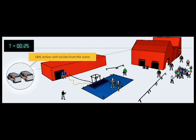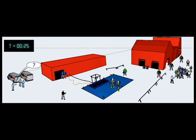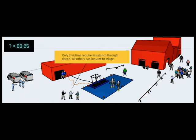EMS units arrive with victims from the scene. They are told to stage their vehicles at a location outside the hospital decontamination zone just adjacent to the decon corridor. The triage nurse takes their reports and begins prioritizing the victims for decontamination. Only two of the victims will require assistance through decon. The others are ambulatory and able to walk to the triage area to be evaluated for further decontamination needs.